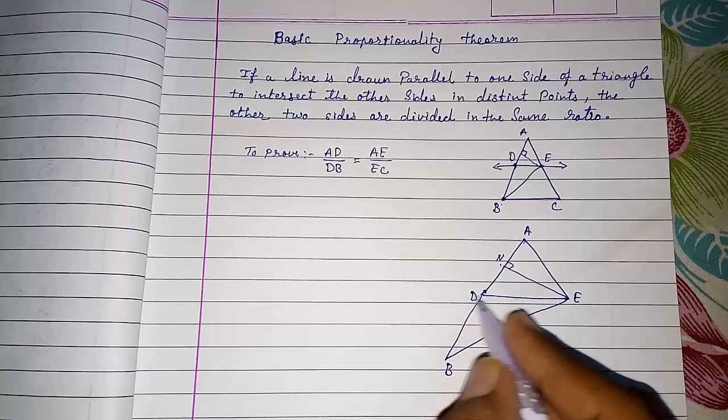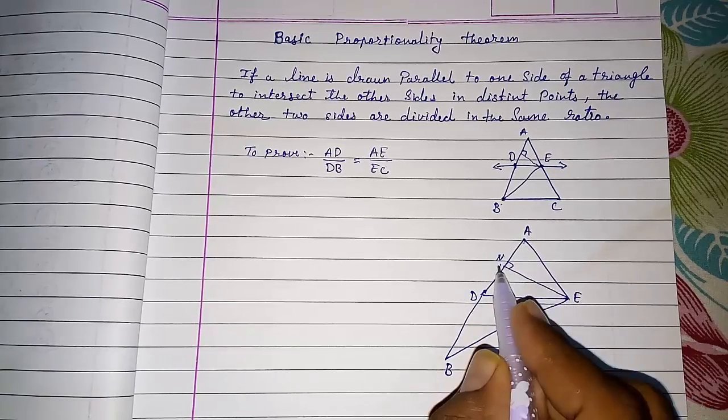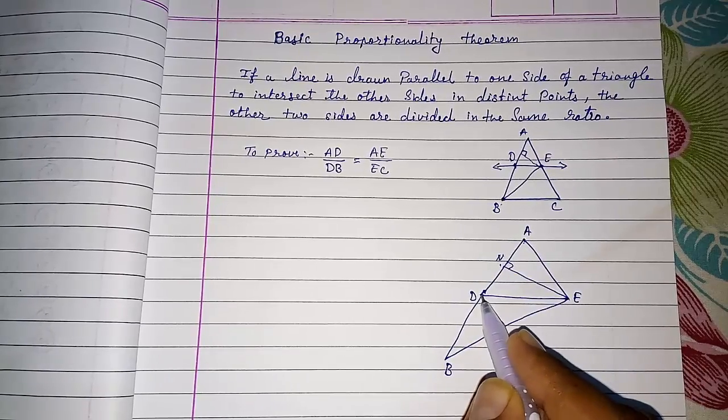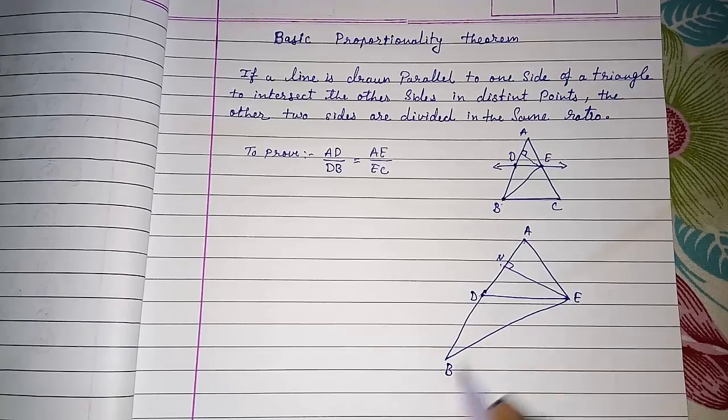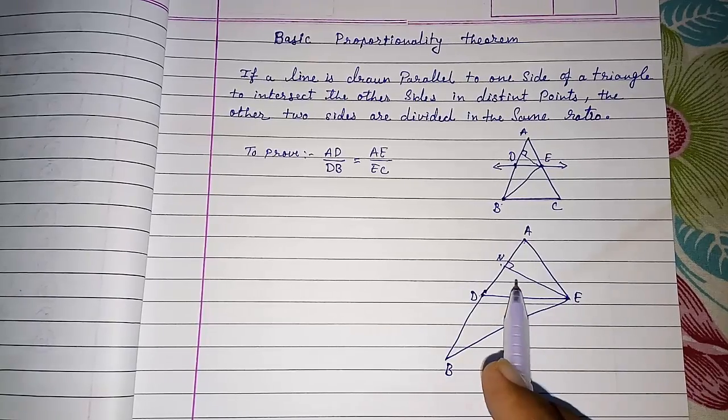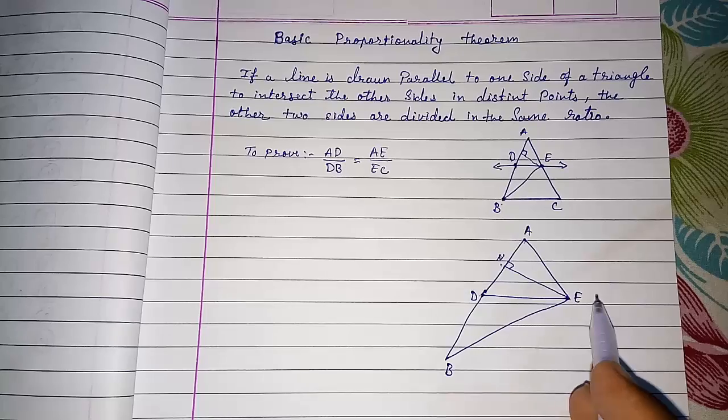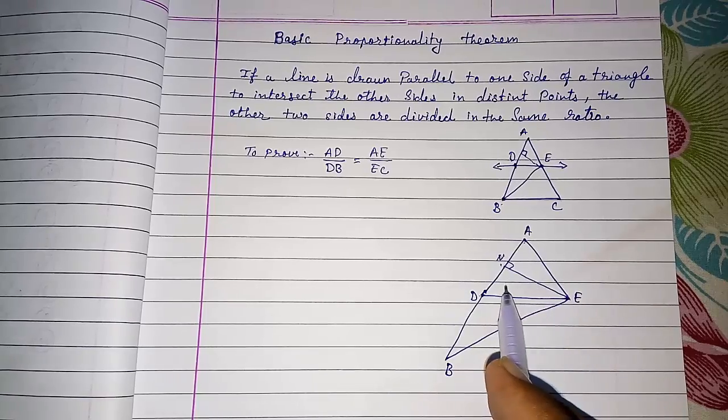This EN is height of ADE also and this EN is height of obtuse angle triangle DEB also. This concept generally students are forgetting and whenever any teacher is explaining, they say sir, by this side, this is the height of this triangle.